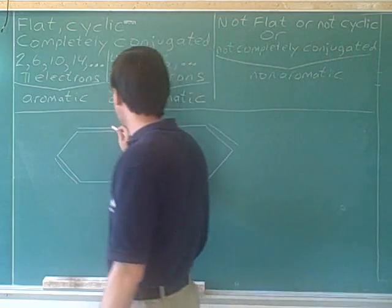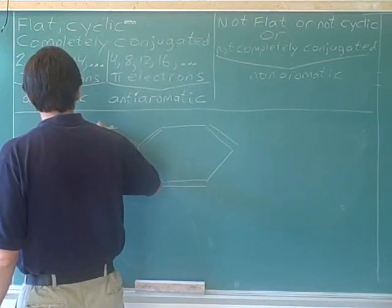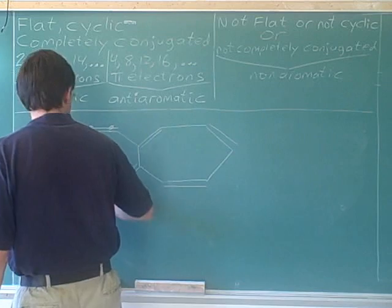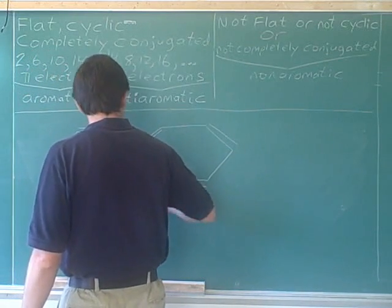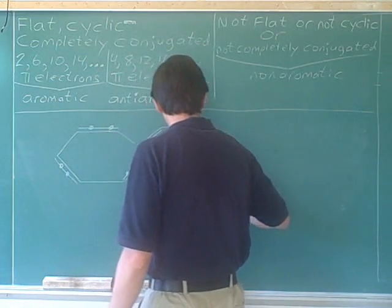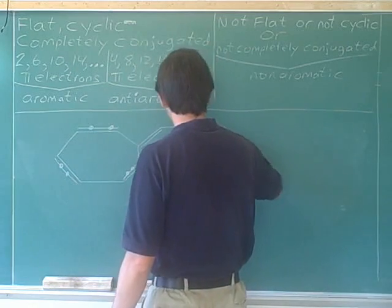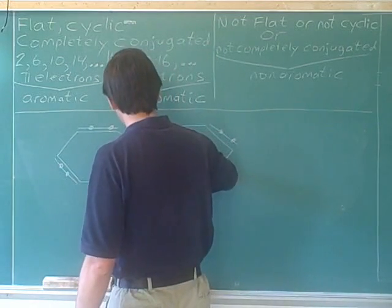Each of the pi bonds has two pi electrons. 1, 2, 3, 4, 5, 6, 7, 8, 9, 10, 11, 12.